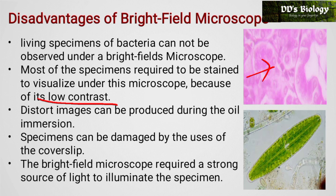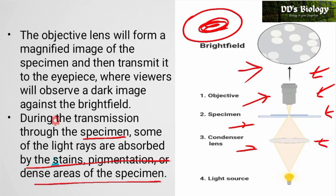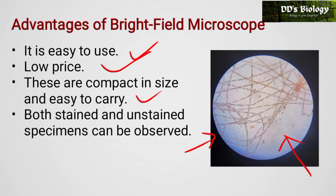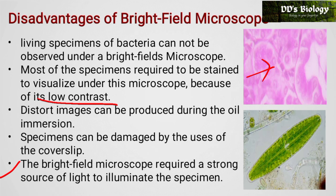The specimen can be damaged by use of a cover slip — if the cover slip is mishandled, the specimen may be damaged. The bright field microscope also requires a strong source of light to illuminate the specimen. With low illumination, contrast is reduced and a clear image of the stained specimen cannot be obtained.